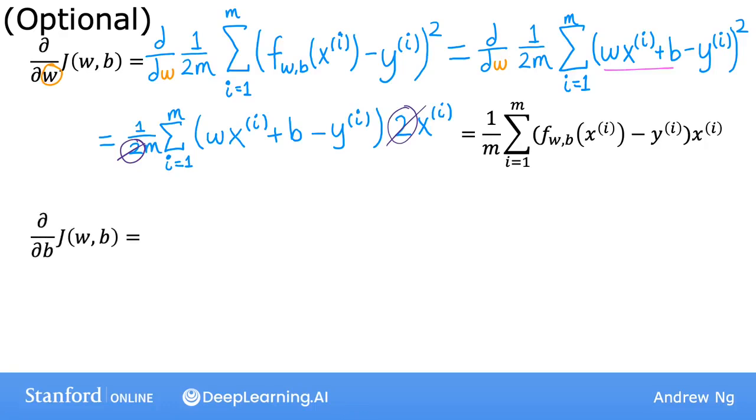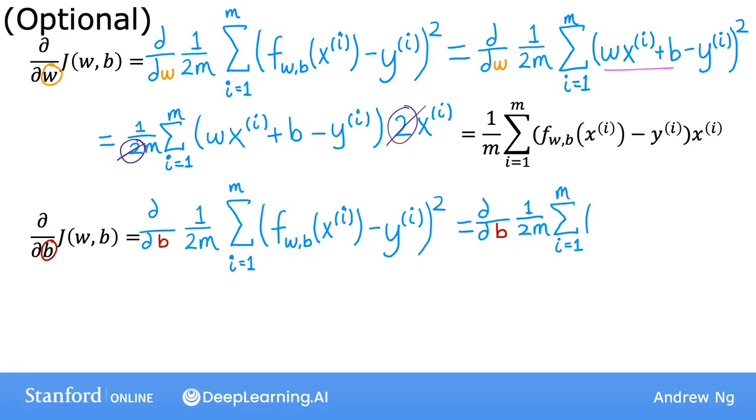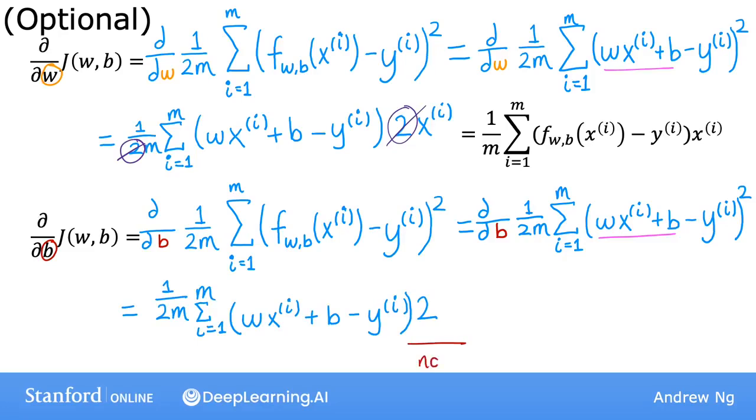For the other derivative with respect to b, this is quite similar. I can write it out like this, and once again plug in the definition of f of x(i), giving this equation. And by the rules of calculus, this is equal to this, where there's no xi anymore at the end. And so the 2s cancel once more, and you end up with this expression for the derivative with respect to b.